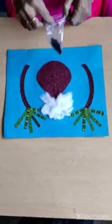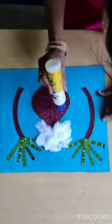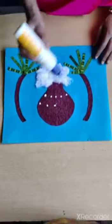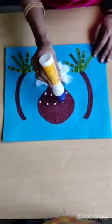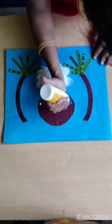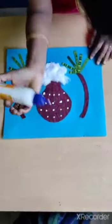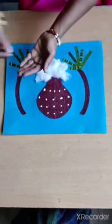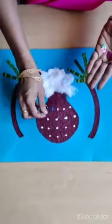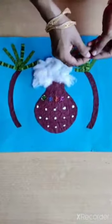Now let us decorate the pot. Children, let me show you how to decorate the pot. Let us take the fevicol and just keep some dots like this. Children, I have some stars here. You can use kundans or any other designer material to decorate the pot.